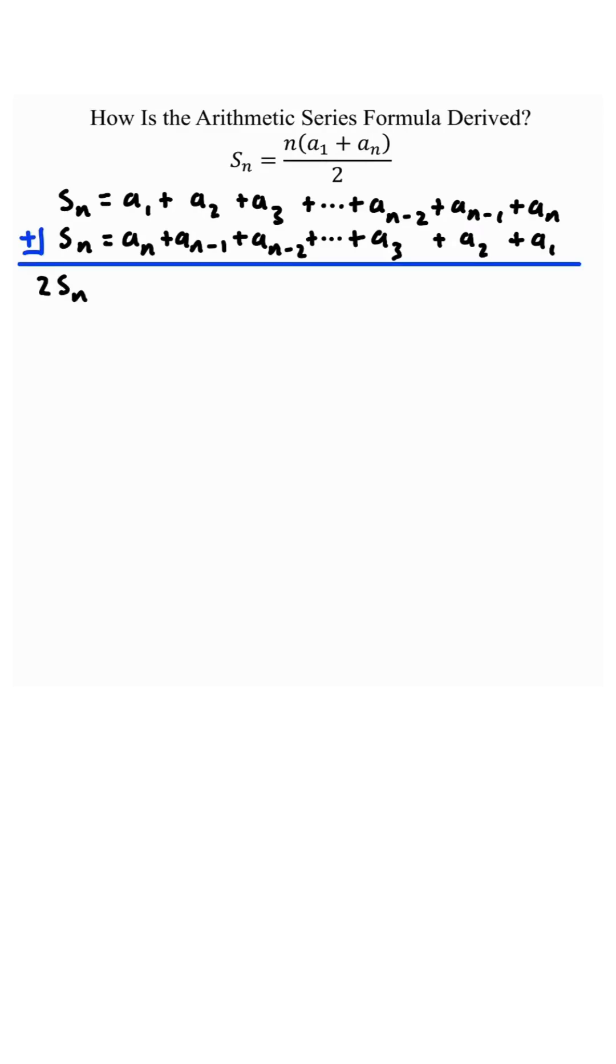Now let's add vertically. S of n plus s of n is 2 s of n. Then we have a sub 1 plus a sub n, a sub 2 plus a sub n minus 1, a sub 3 plus a sub n minus 2, and so on all the way down to a sub n plus a sub 1.